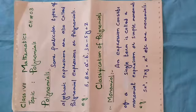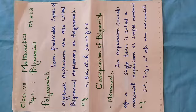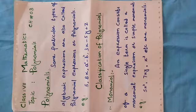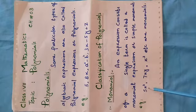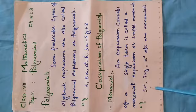Now let's study the classification of polynomials. The first one is monomials. An expression consisting of a single term is called a monomial expression, or simply a monomial, because it consists of one term. For example: 5x², 7xy, and x³. All of these consist of one term.